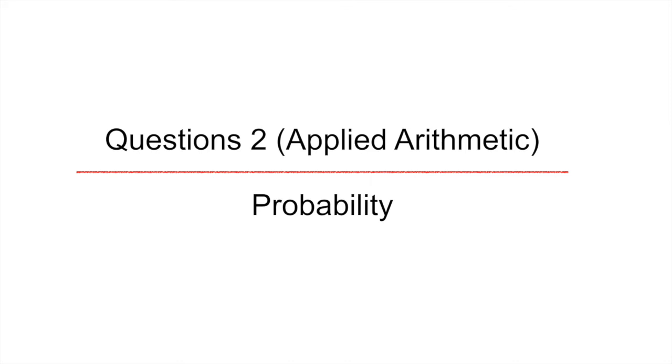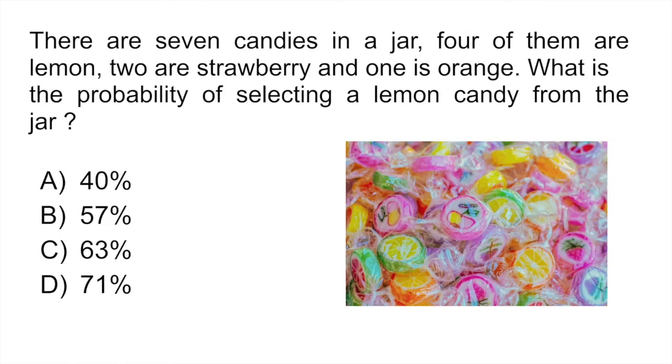Question two is an applied arithmetic problem looking at probability. There are some questions in the GED which ask about probability and statistics. And probability is simply whether something is likely or unlikely to happen. There are seven candies in a jar. Four of them are lemon, two are strawberry, one is orange. What is the probability of selecting a lemon candy from the jar?